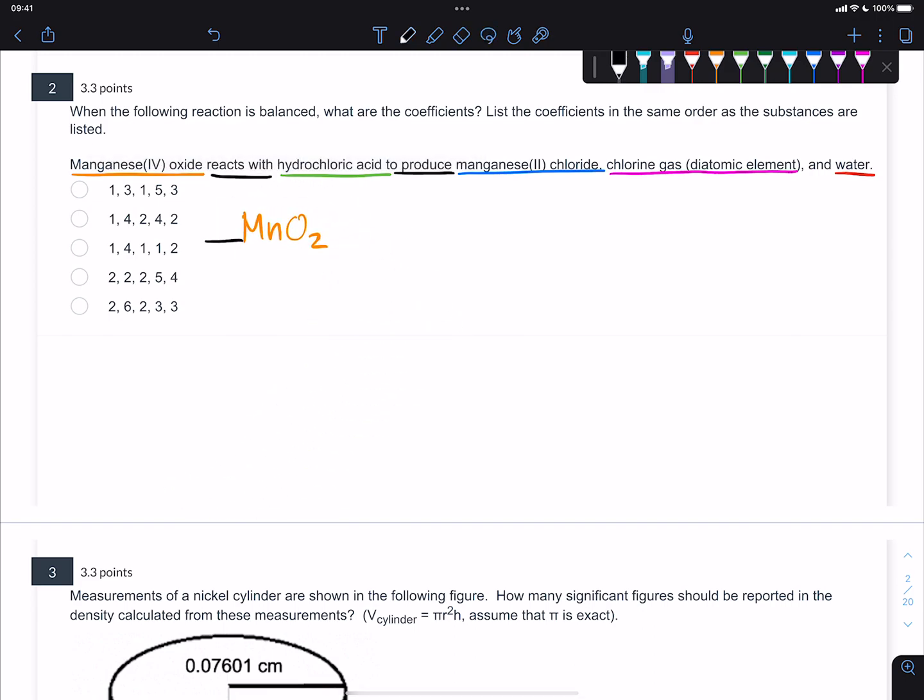We can put a black bar because, actually, I'll make it orange, because we know we're going to have to balance this. Then it says reacts with, so that's going to be a plus sign. Hydrochloric acid. Definitely know how to name your acids, but this is a really simple one. Hydrochloric is just HCl. Then it says to produce. Sometimes you'll see to produce, to form, to yield. That's your sign to put down a reaction arrow.